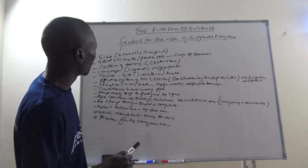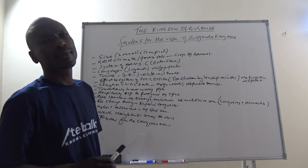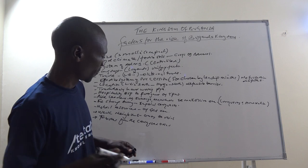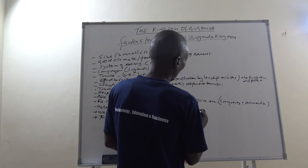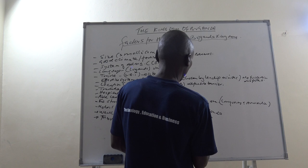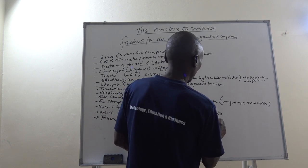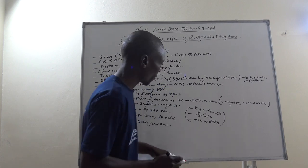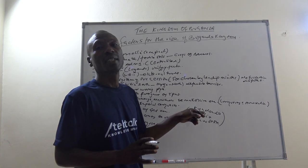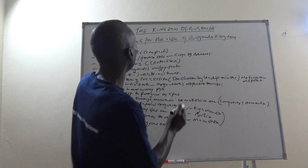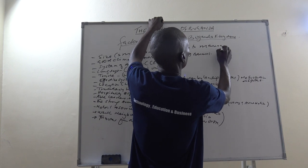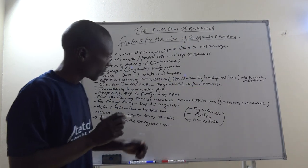Factor number one was the size. Buganda was small and compact. It grew from a small nucleus of three counties: Chadondo, Dosero, and Malakota. Those three formed the original Buganda. Small as they were, they were easy to administer — easy to manage. Because of the size, it was easy to manage.